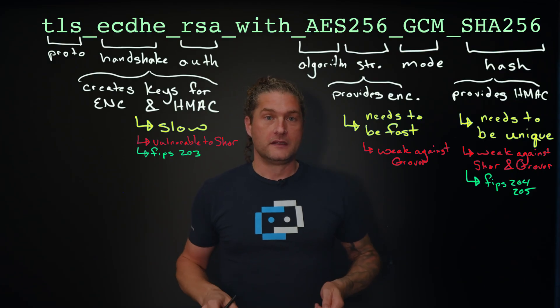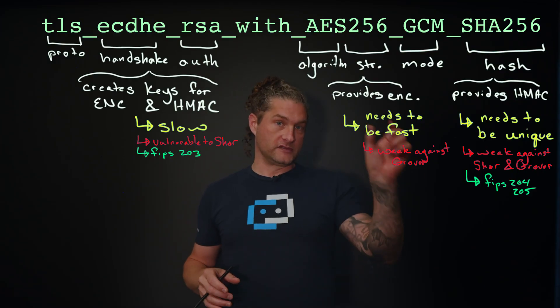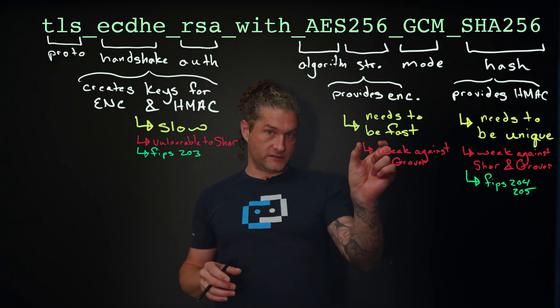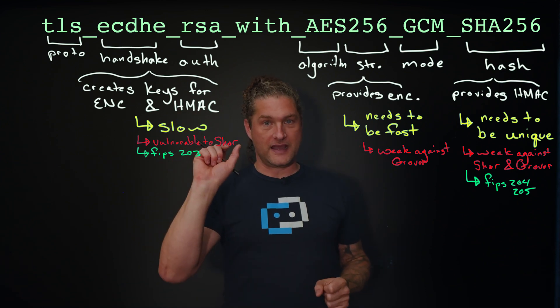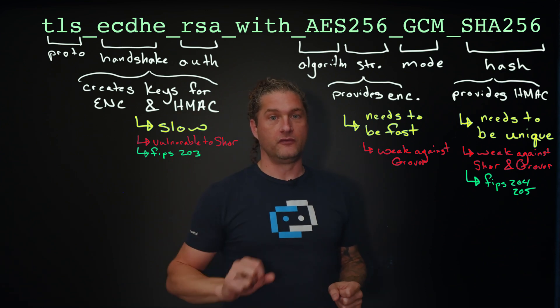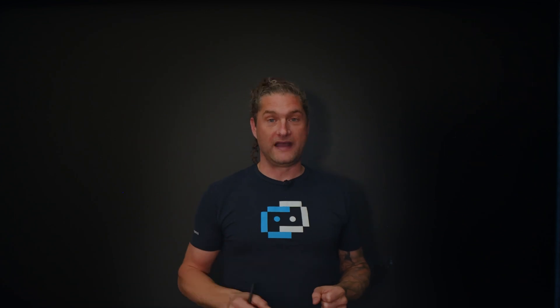As for hashing, Shor's and Grover's both make that broken or weak. So we have: FIPS 203 solves for the first part, and FIPS 204 and 205 solve for the hashing and signature parts.